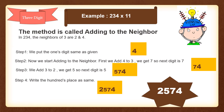Now let us see if this trick works for a 3-digit number also. We have to find the product of 234 multiplied by 11, using the same steps — adding to the neighbor. Step 1: we write the 1s digit as it is, that is 4. Then we start adding the neighbors: 4 plus 3 is 7, so we get 7 as the 10s digit.